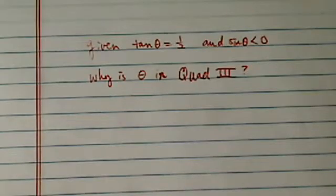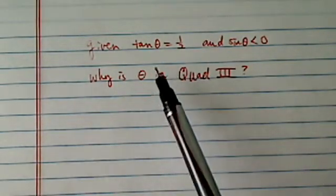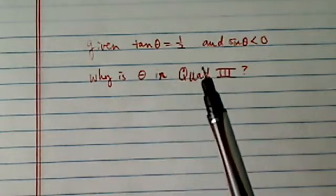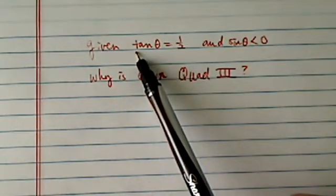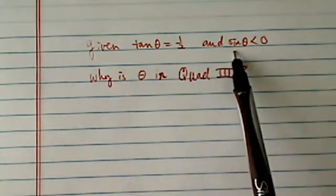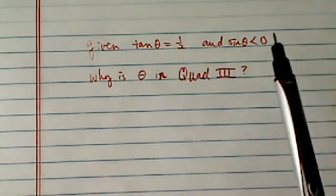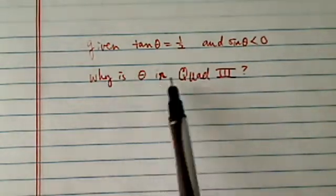Hey there, thank you for watching this clip here on deciding which quadrant theta is in. We're given a little clue that tangent theta equals half and sine of theta is less than zero. So the question is, why is theta in quadrant three?